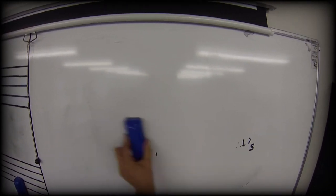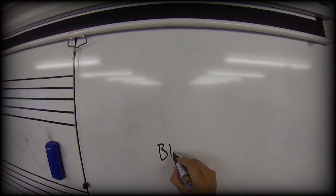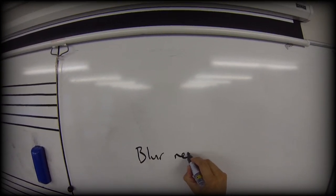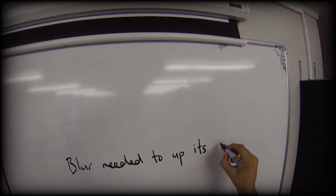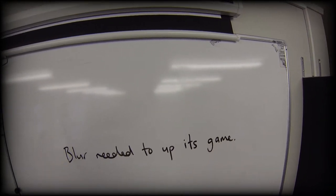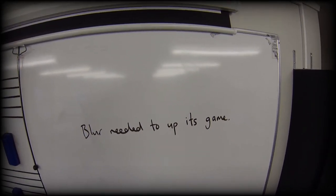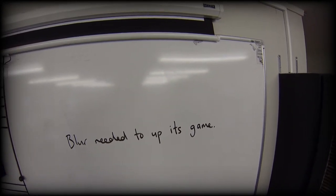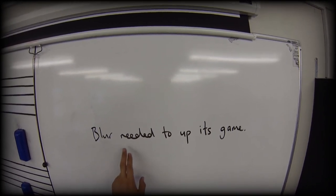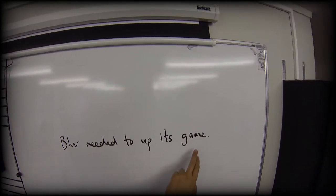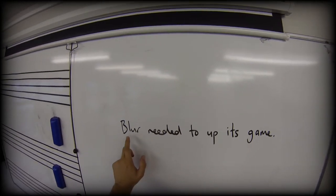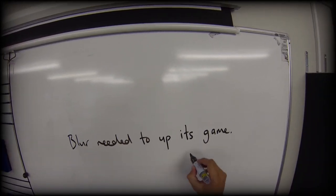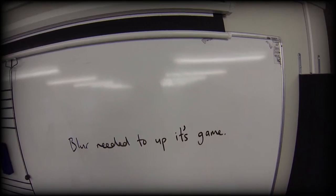And so if I was to say, going back to the band Blur, Blur needed to up its game. Now according to our possessive apostrophe rule, it would be Blur needed to up the game that it had. The game that belonged to Blur. So you would think you would put an apostrophe in there. Blur needed to up the game that belonged to it, meaning Blur.